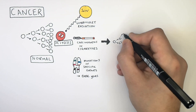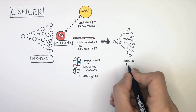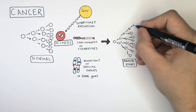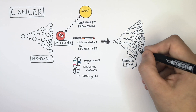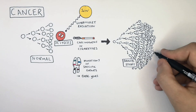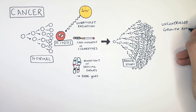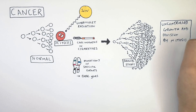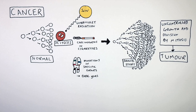So if mitosis in certain tissues of certain organs cannot be stopped, that leads to uncontrolled growth and cell division by mitosis. The cells in certain tissues of certain organs will just not stop multiplying, and this can lead to the formation of tumors.